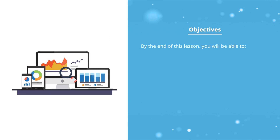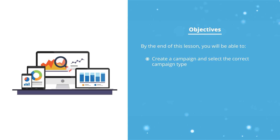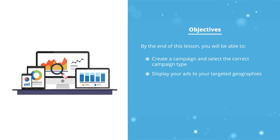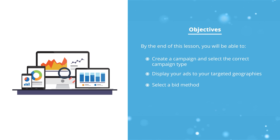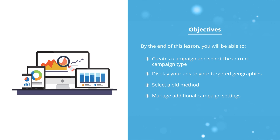By the end of this lesson, you'll be able to create a campaign and choose the proper campaign type, show your ads to target geographies, choose a bid method, and manage additional campaign settings.